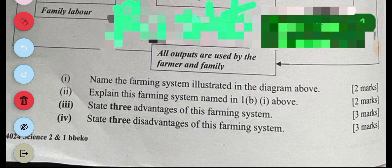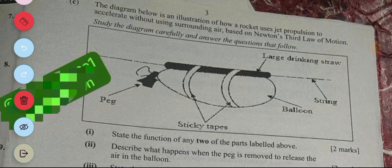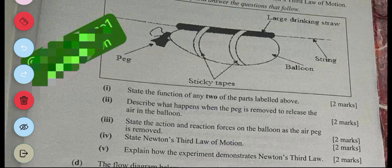On this question, the diagram below is an illustration of how a rocket uses jet propulsion to accelerate without using surrounding air based on Newton's third law. So we have a diagram here with a balloon, sticky tapes, peg, a string, and a large drinking straw. So the first question is state the function of any two of the parts labeled above. So the peg prevents the balloon from deflating. Then the string serves as a guide or it gives direction to the balloon. Assuming the peg is removed for the balloon to propel itself, sticky tape is used to attach the straw to the balloon.